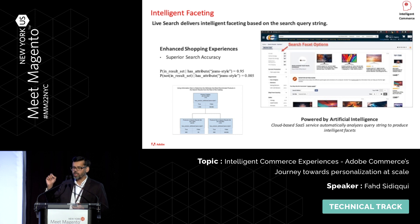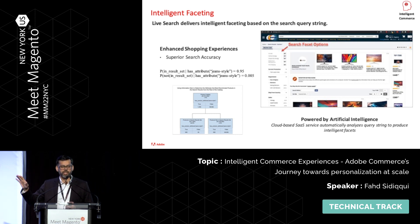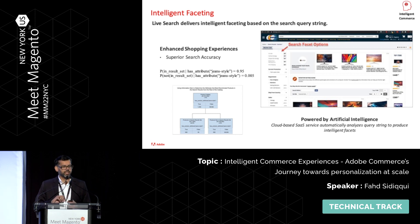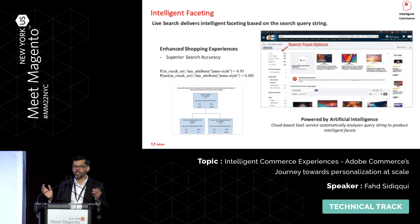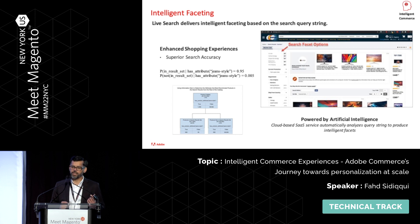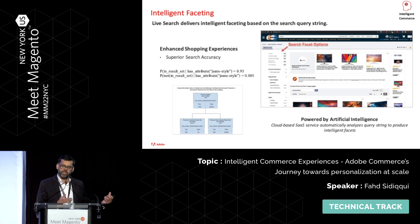The goal of intelligent faceting is: based on whatever search the user does, automatically figure out what the key significant features are that they would like to filter on. This is also known as feature selection. We employ existing abilities of Elasticsearch like JLH score. If you search for 'jeans' and jeans size appears in only 5% of your entire catalog but in 95% of your search result set, LiveSearch automatically understands this attribute is focused for this result set and puts it in your facets.